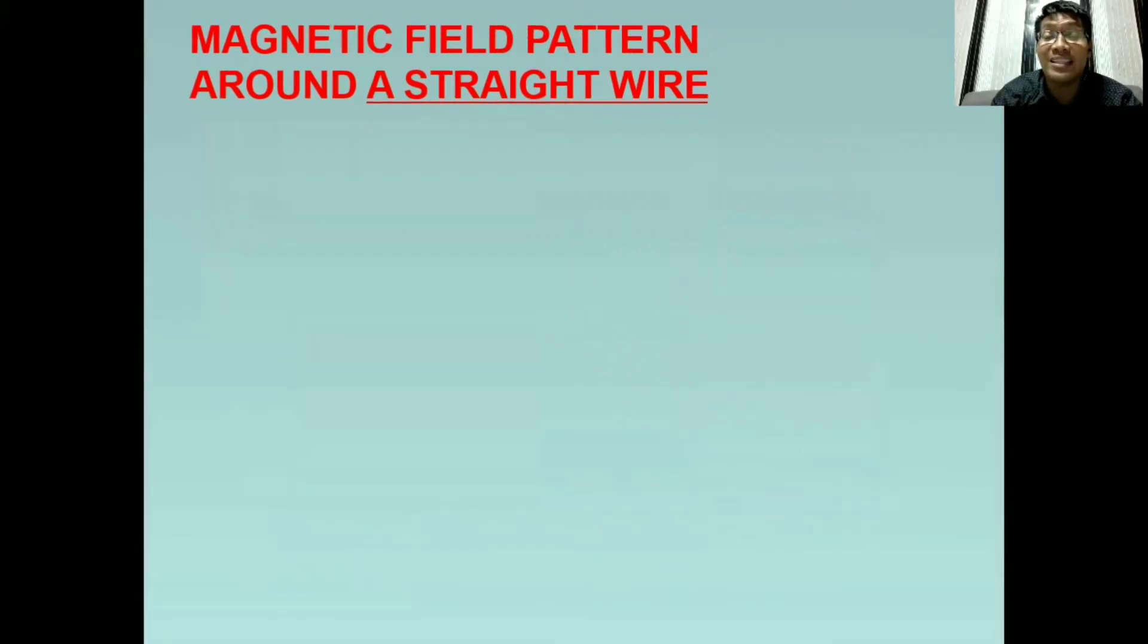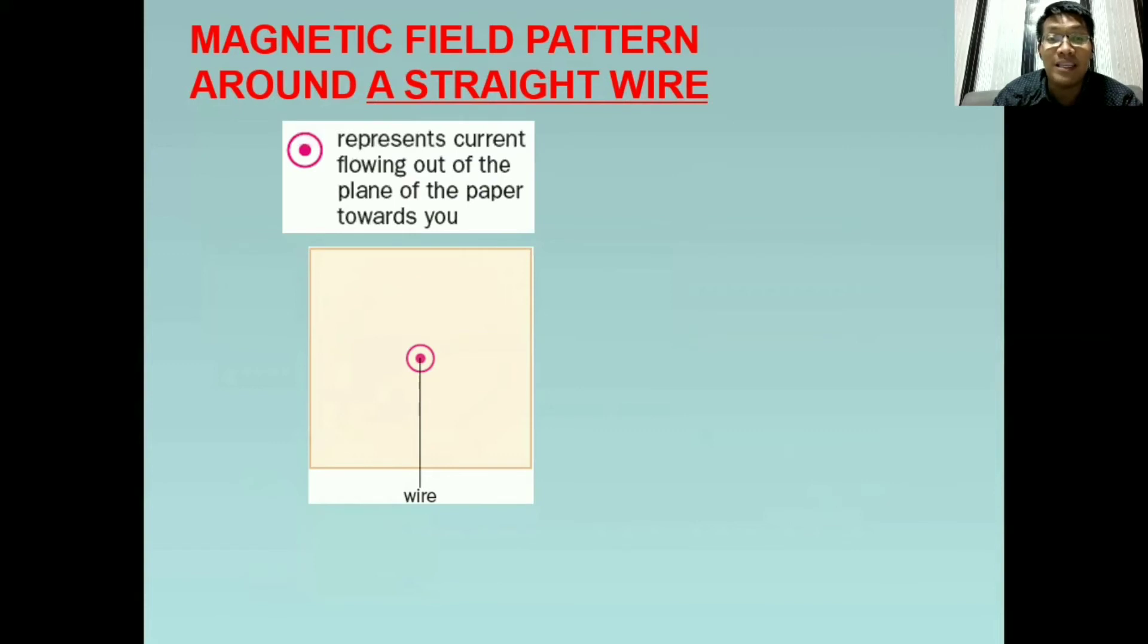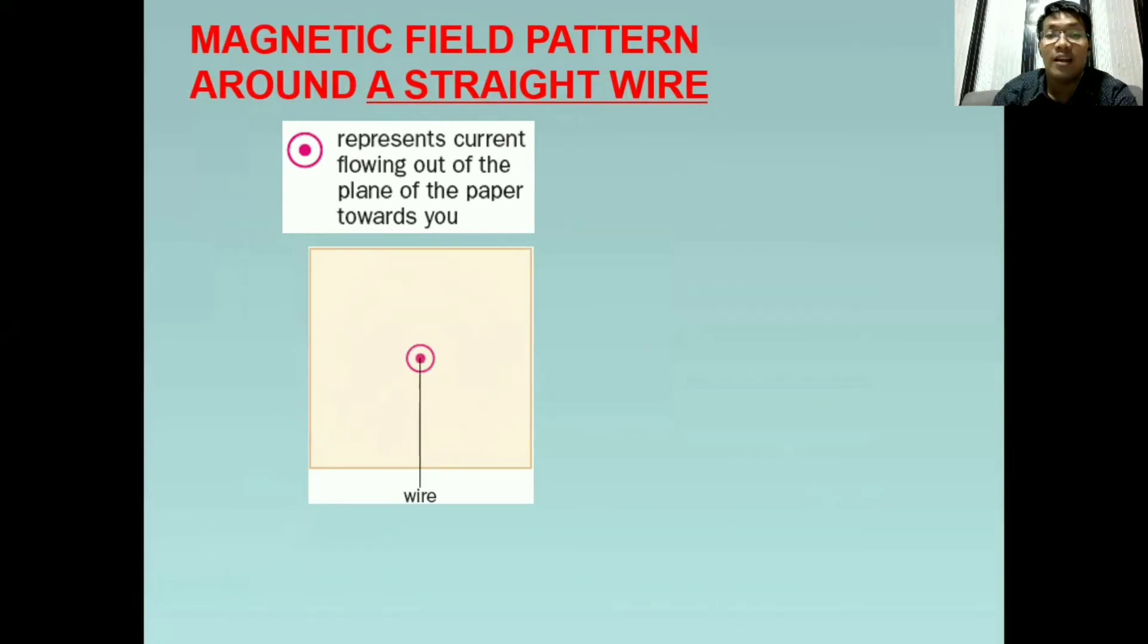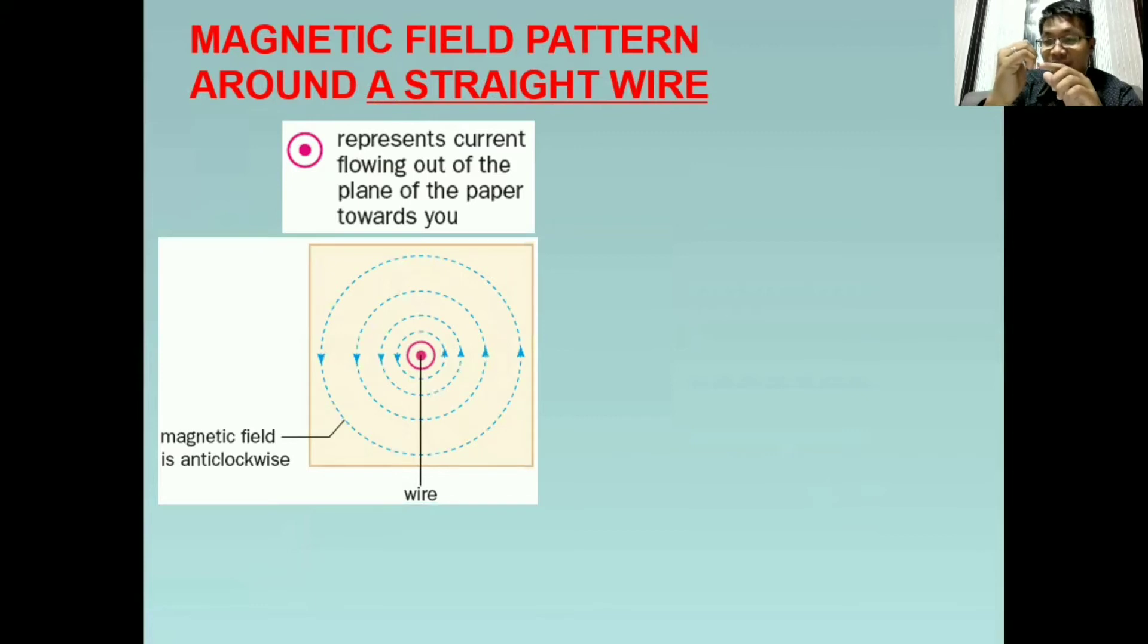For most of standardized tests or quizzes or some other references, they are using symbols. Just like this one, like a dot. And if you have this symbol, it means that the current is flowing out of the plane of the paper or towards you. So ibig sabihin, i-point natin ang thumb natin papunta sa atin. So tatandaan lang, pag dot or O, out. Outward.